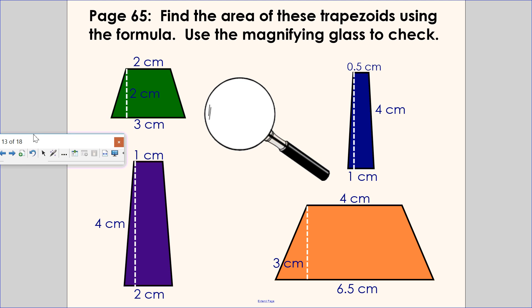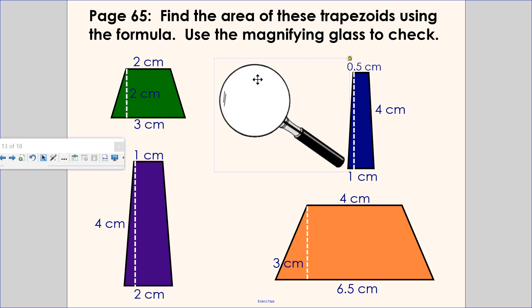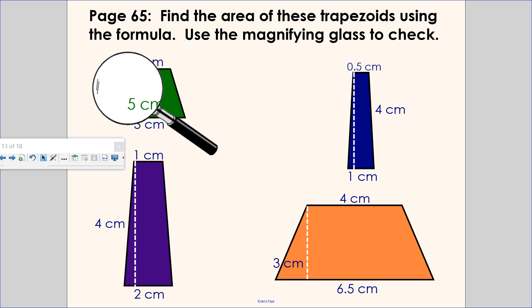Let's just make sure you really do understand this. Because I know area of trapezoid is one of the harder things. So use the magnifying glass to check. Let's see if I do this in my head. I added the two bases, 2 and 3, that's 5. Half of 5 is 2.5 times the height of 2 is 5. Yep, that's the area.